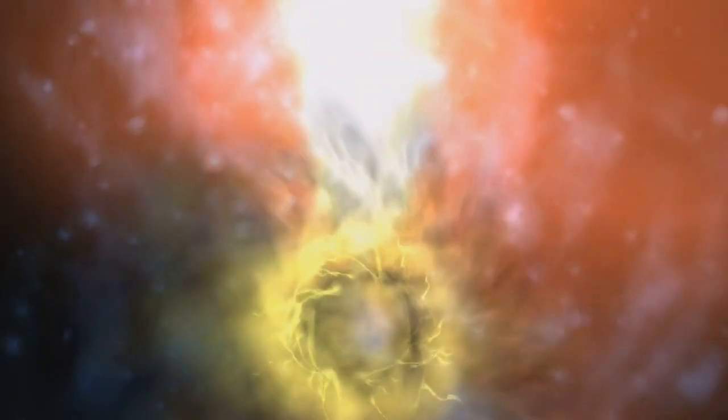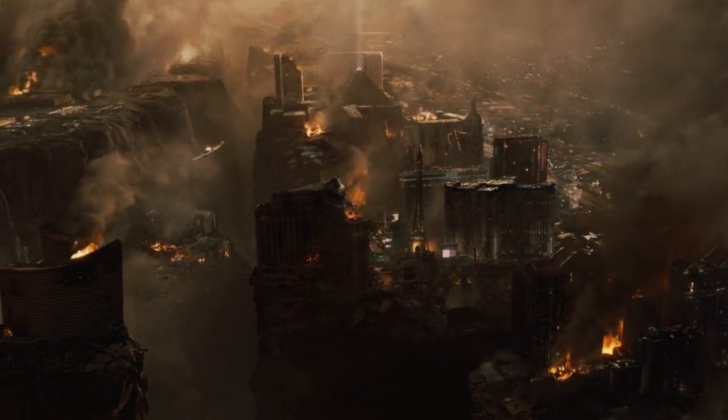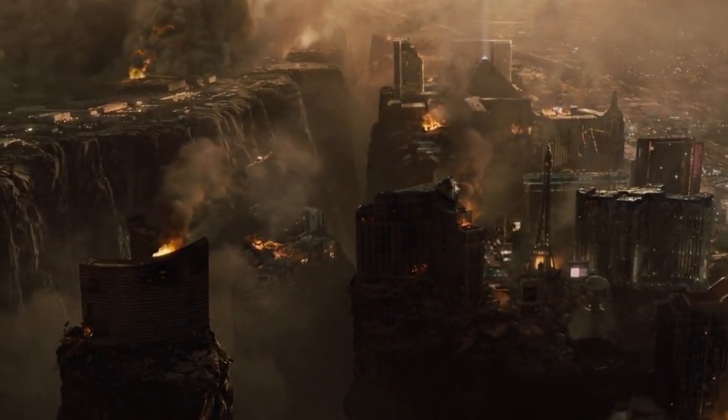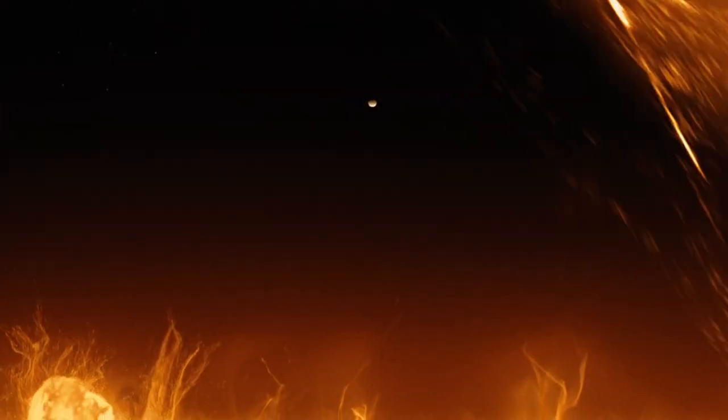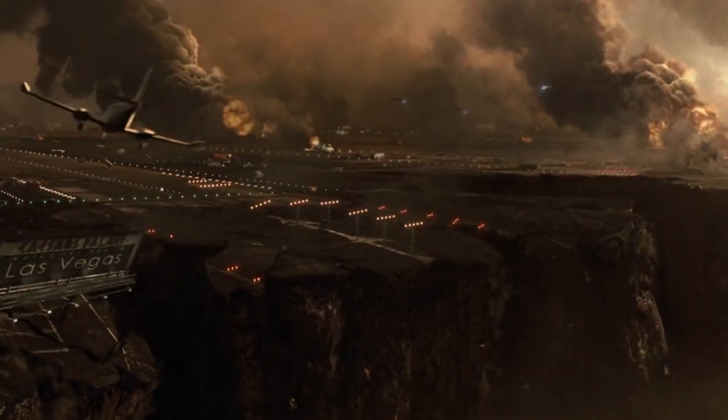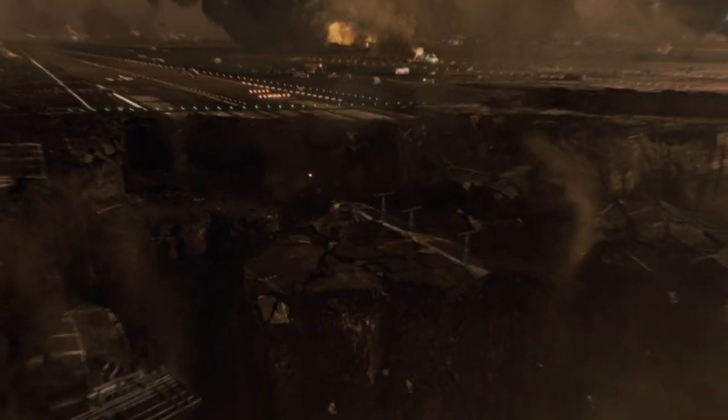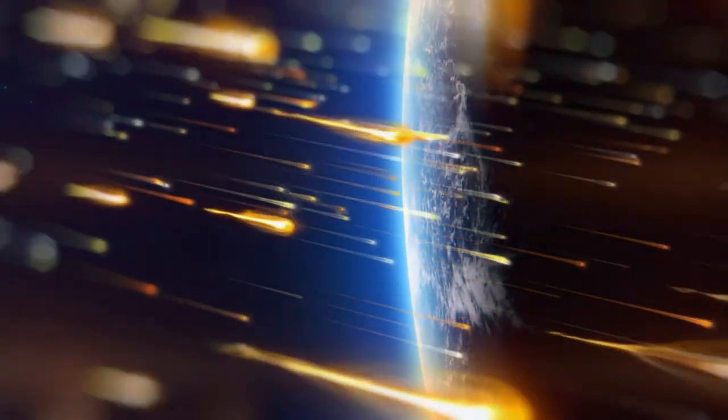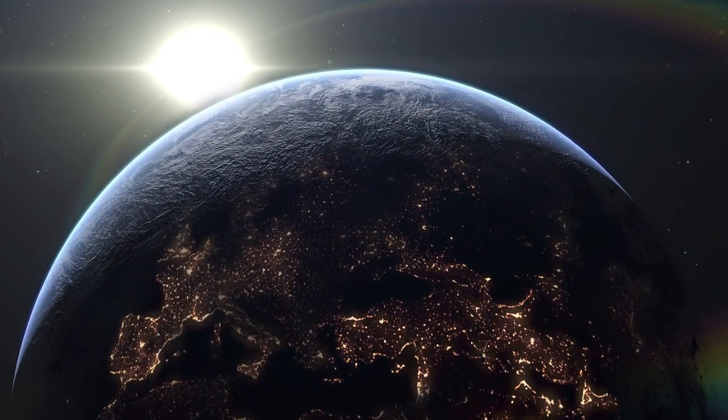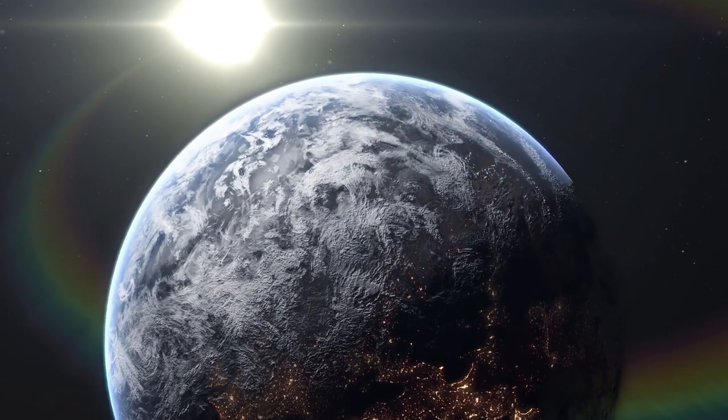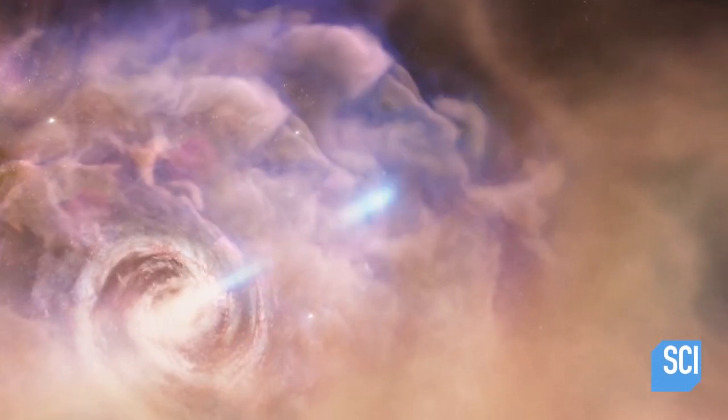Imagine a scenario where the world faces a cosmic threat so perilous it could rival the apocalyptic events depicted in the movie 2012. In this film, a planetary alignment triggers colossal solar flares that unleash devastating consequences for Earth, from massive power outages to widespread communication failures. Such an event isn't purely fictional. In fact, if a solar flare was aimed directly at Earth, it could cause serious problems for us. The intense radiation could strip away the ozone layer, which protects us from harmful ultraviolet radiation from the sun. This would lead to increased exposure to UV radiation, potentially causing health issues for us and other life on Earth. But the trouble wouldn't end there.